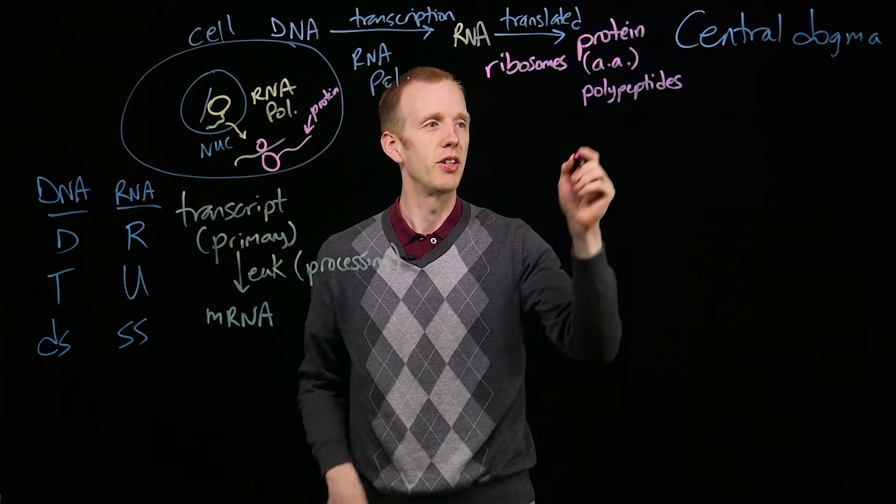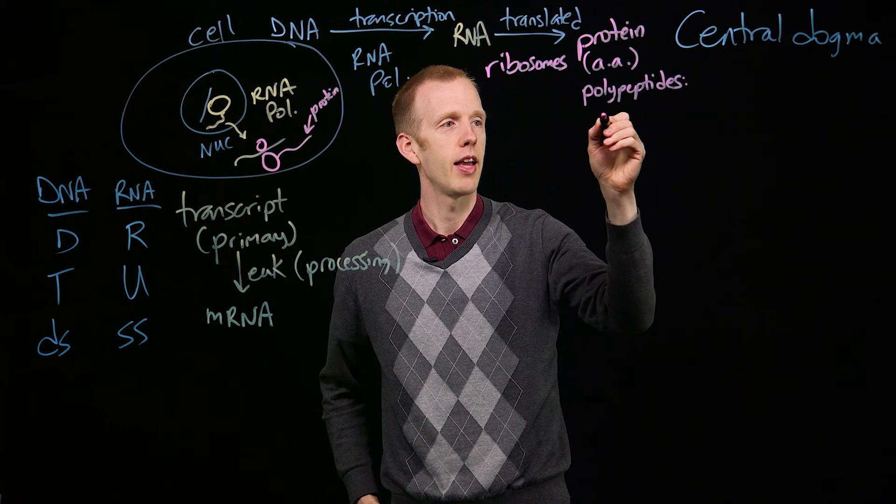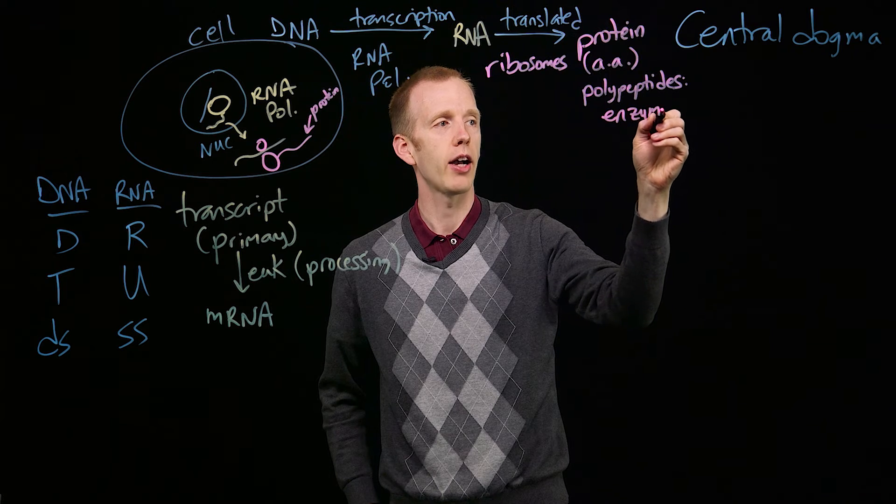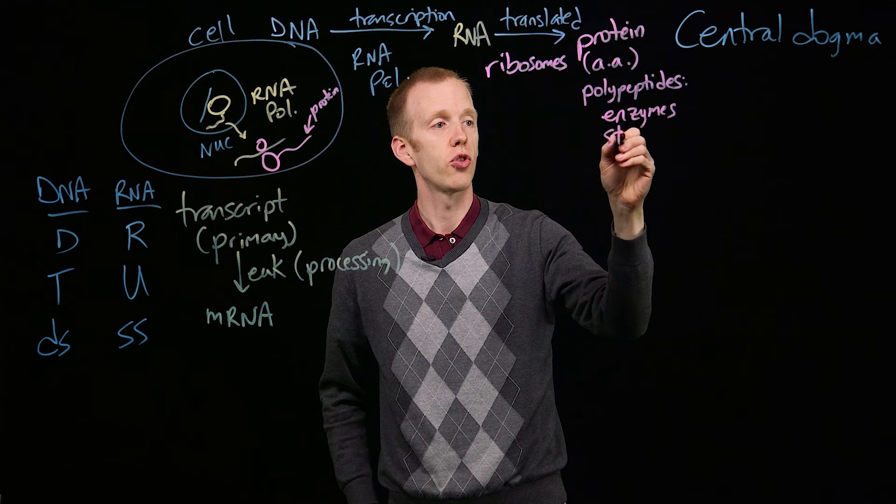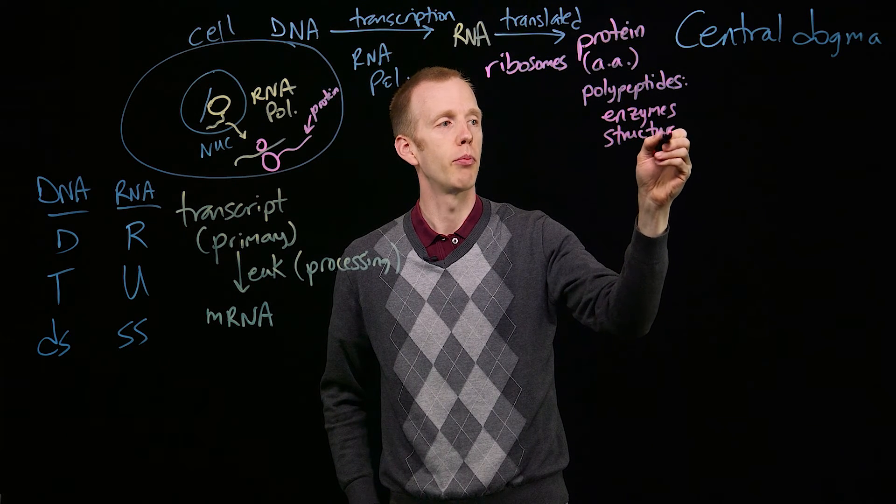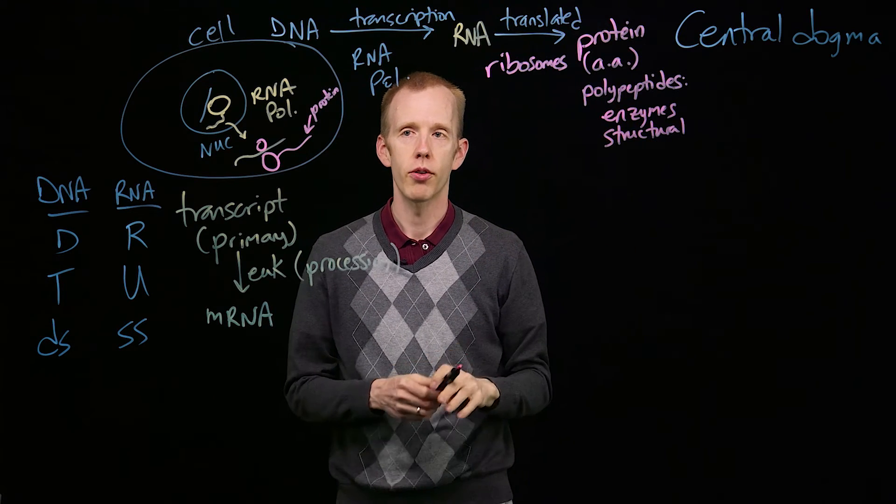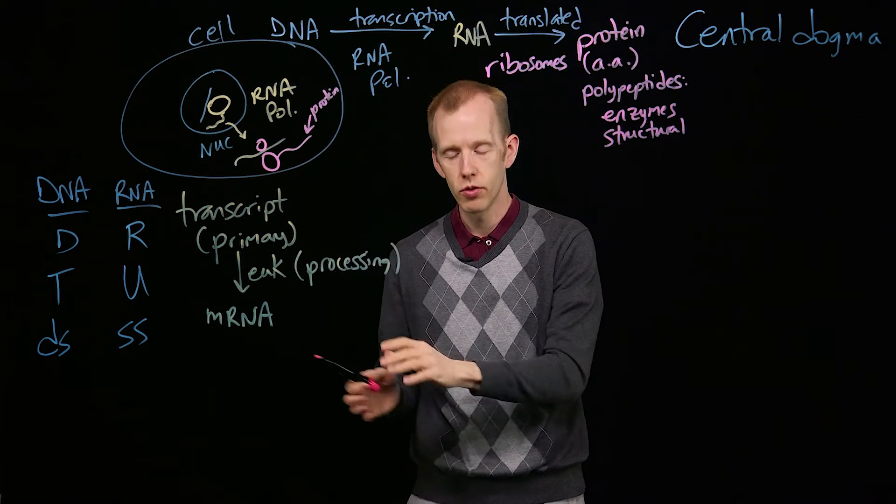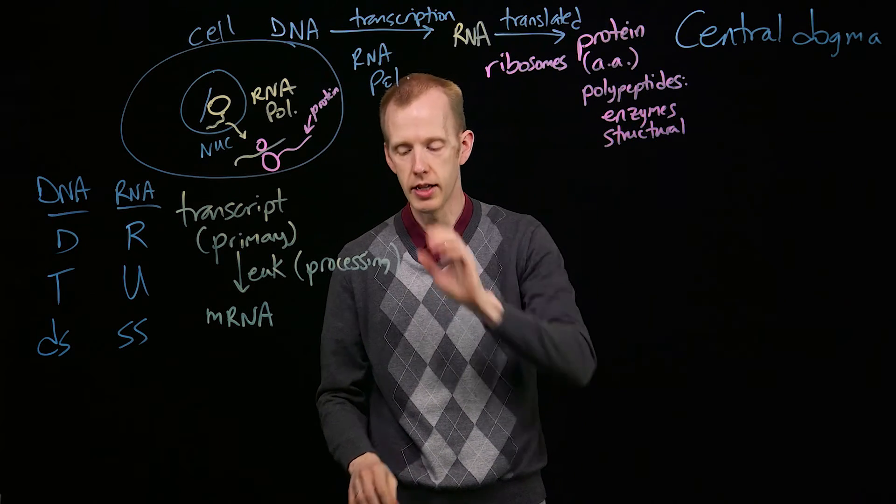Most proteins, some proteins anyway, are enzymes. They catalyze chemical reactions. Some proteins are structural, they actually build components of the cell. So the goal of the central dogma is to produce proteins from DNA.